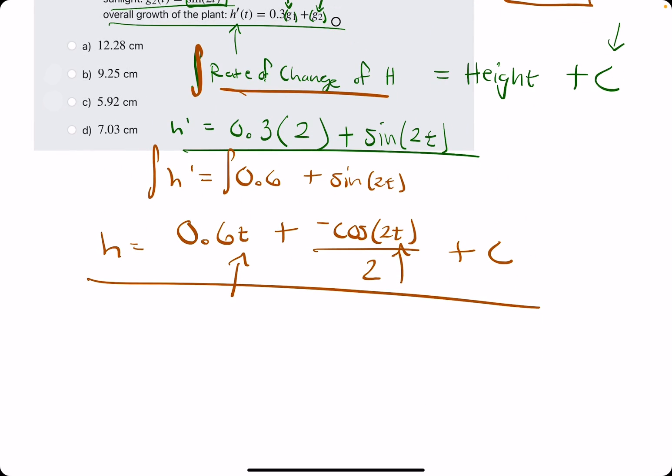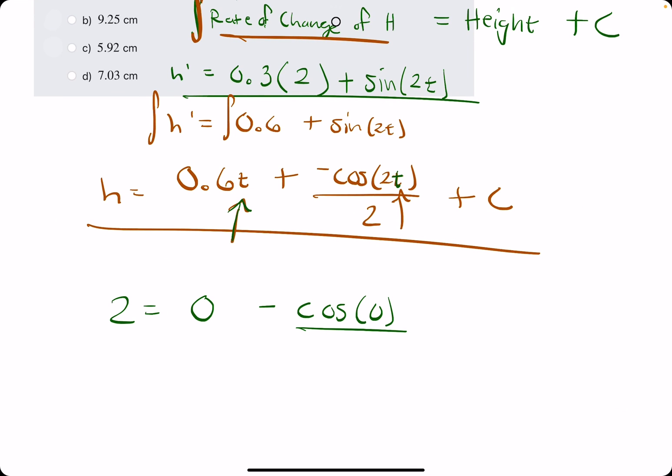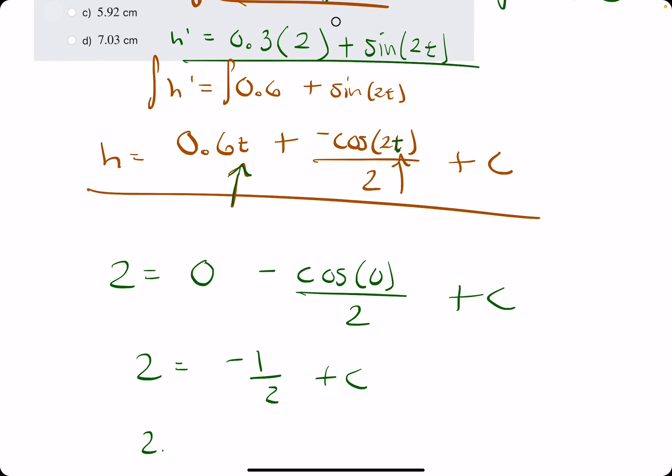We are plugging in 2 for h and 0 for t. Plugging in 0 for t here will make this whole first term 0. Plugging in 0 inside the cosine will make this cosine of 0 over 2 plus C. 2 is equal to negative cosine of 0. Well, cosine of 0 is 1, so we have negative 1 over 2 plus C. We add this 1 half to the other side, and we have 2.5, or 5 halves, is equal to C.